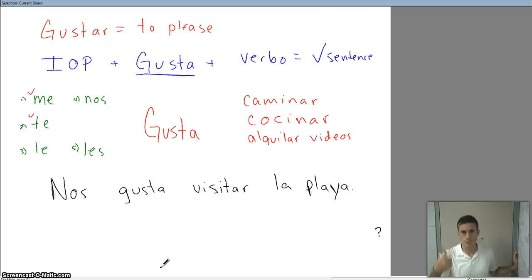Nos gusta visitar la playa. We like to visit the beach—visiting the beach is pleasing to us. Let's see if we can find the pieces of our formula. Nos is the indirect object pronoun. Gusta, that's always going to be there, that's our definite that's never going to change. And then the very last part, that is our verb, the activity that we enjoy doing.